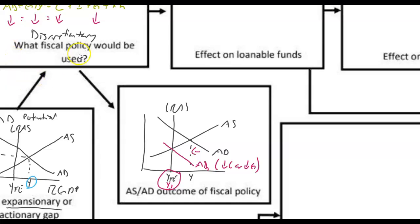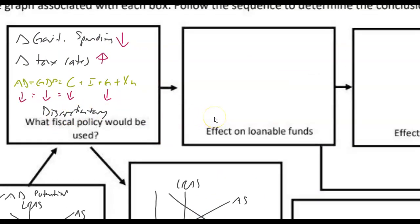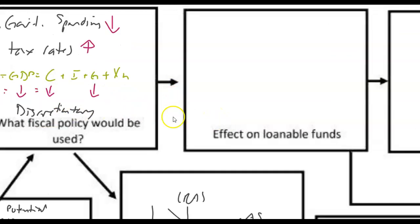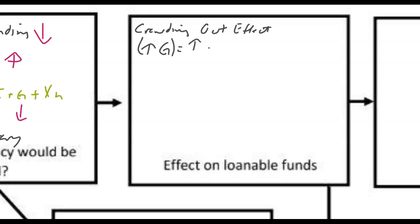But here's the other thing. What if instead of going from fiscal policy to the ASAD, what if you did fiscal policy over to the loanable funds? We call this the crowding out effect. The crowding out effect is the idea that if there's an increase in government spending, that means there's an increase in the money that the government borrowed. Most governments — maybe all governments — are in debt, so whenever they have to increase their spending, they must borrow more money.